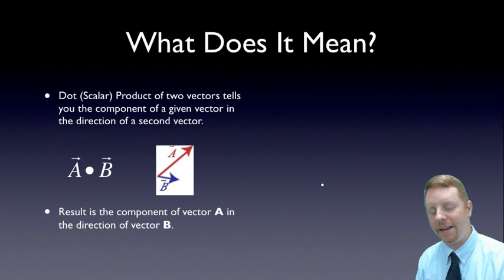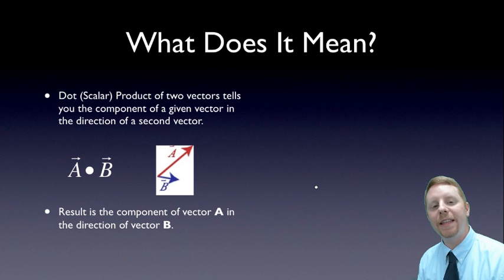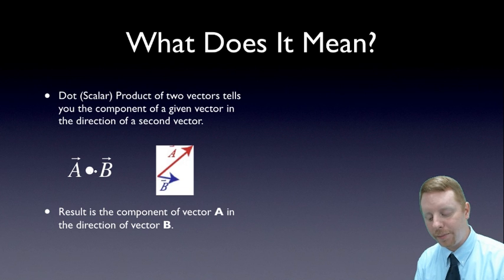What does it really mean? The dot or scalar product of two vectors tells you the component of a given vector in the direction of a second vector. So if we're looking at vector A dotted with vector B, the dot product of those two is the component of vector A in the direction of vector B.